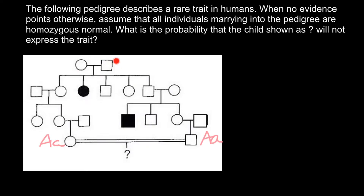So let's find the probability for this parent to be heterozygous, so that this parent would be able to pass the defective allele to descendants. This couple has one child that is affected, so the genotype of that child would be small a small a. That means both of these parents have to be heterozygous — phenotypically normal but both carriers.